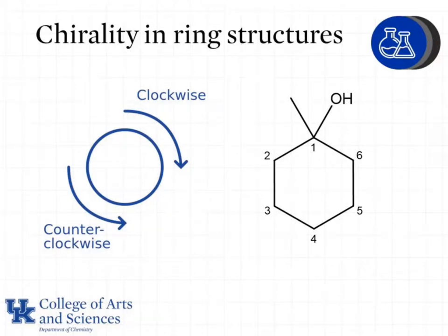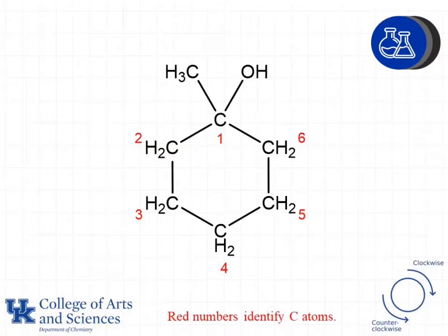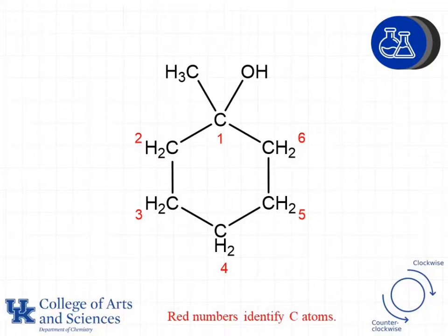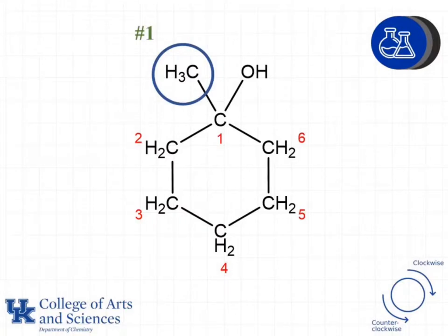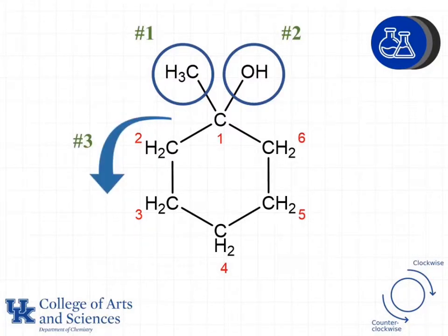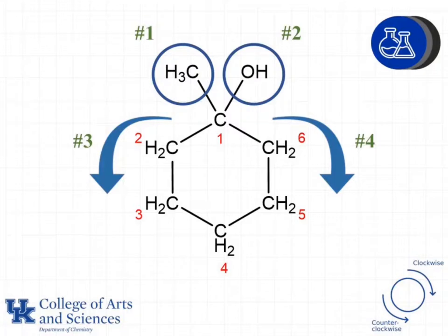Let's look at an example. The hydrogen atoms have already been added to this molecule, so we don't need to add them ourselves. When I look at carbons two through six, I see that each of those carbon atoms has two hydrogens, which means it cannot have four unique groups, so I don't need to look at any of those to determine whether or not they are chiral. The carbon I need to look at is carbon one. For carbon one we have a CH3 group, an OH group for group number two, group number three is going in the counterclockwise direction around the ring, and group number four is going in the clockwise direction around the ring.